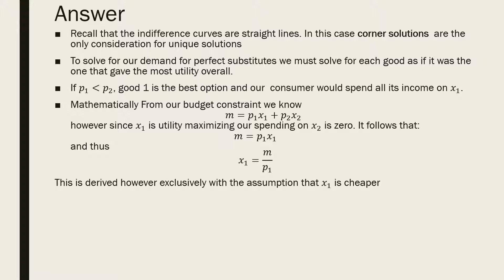Mathematically, from the budget constraint we know that m is equal to p1x1 plus p2x2. However, since x1 is utility maximizing and we spend all of our money on x1, our spending on x2 is zero.